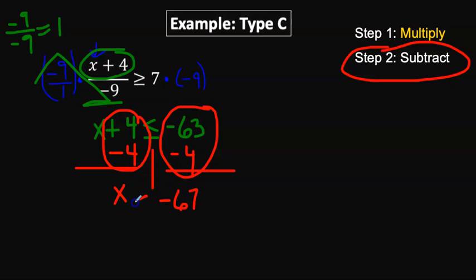Subtracting 4 from each side does not flip the inequality, so our final answer is x is less than or equal to negative 67.